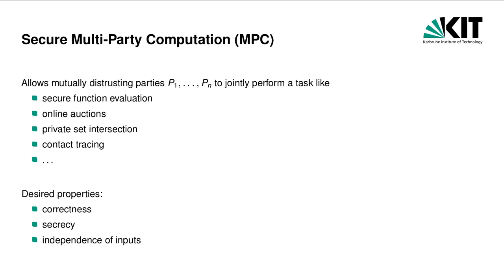Secure Multiparty Computation, abbreviated by MPC, allows mutually distrusting parties P1 to Pn to jointly perform tasks like secure function evaluation where the parties evaluate a function on private inputs, host a first-price sealed-bid auction where only the highest bid and the winner are revealed, the intersection of sets where nothing but the intersection is learned, or COVID contact tracing. More generally, MPC can be used to perform arbitrary computations in a secure way.